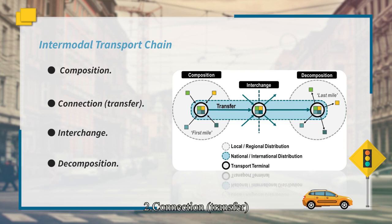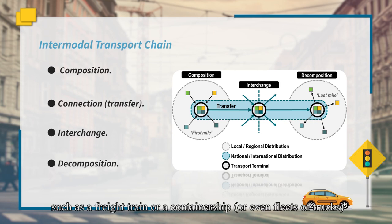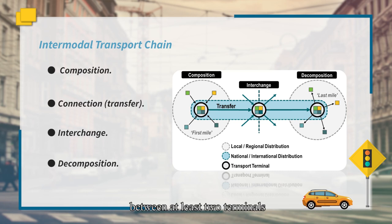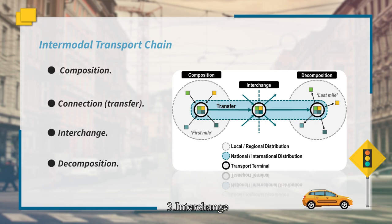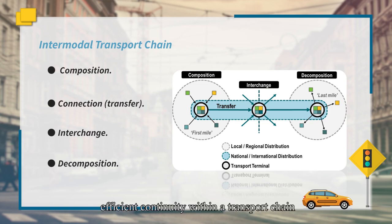The second step is connection, which involves a consolidated modal flow such as a freight train and container ship between at least two terminals, taking place over national and international freight distribution systems. The third step is interchange — the major intermodal function that takes place at terminals whose purpose is to provide efficient commodity transfer within a transport chain.